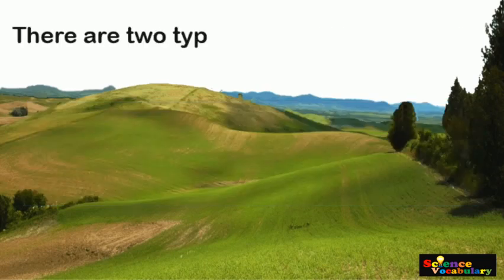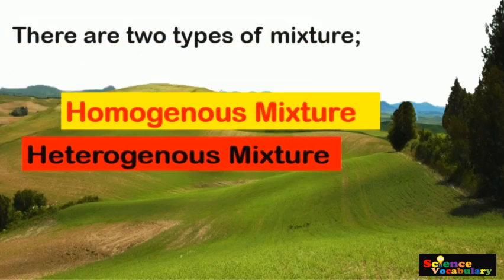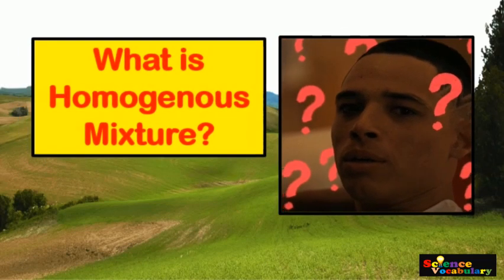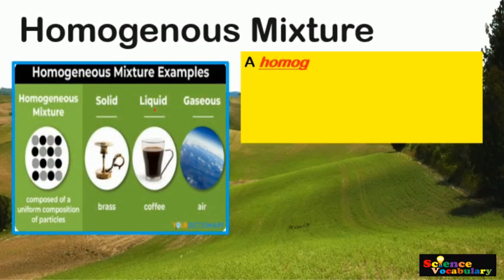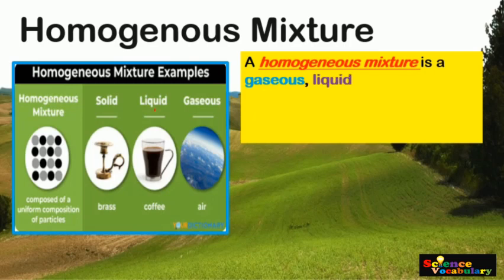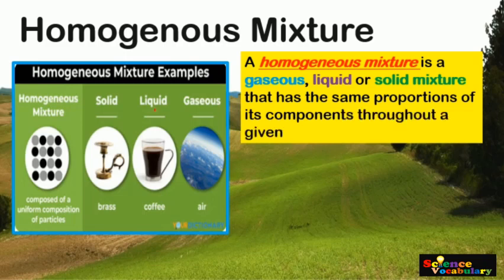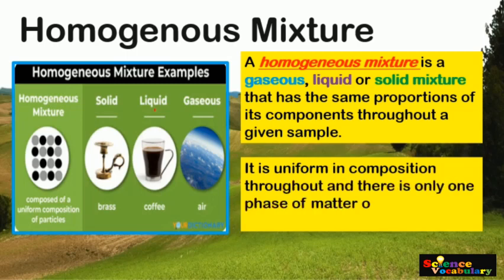There are two types of mixtures: Homogeneous Mixture and Heterogeneous Mixture. A Homogeneous Mixture is a gaseous, liquid, or solid mixture that has the same proportions of its components throughout a given sample. It is uniform in composition throughout, and there is only one phase of matter observed in this mixture.